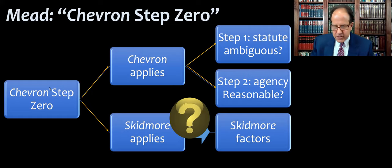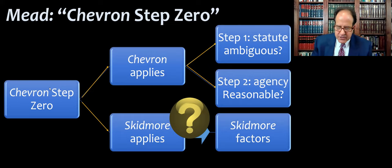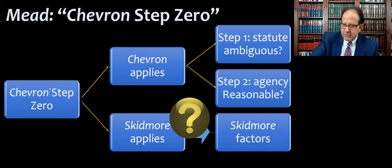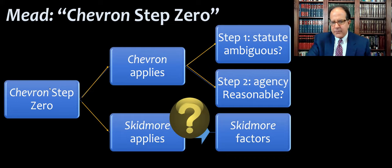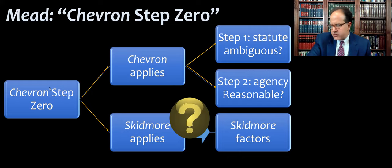So Roberts says we're not doing Chevron, but then he might as well be — he still says the statute is ambiguous and then says this interpretation is a reasonable one because it saves the statute, but says he came up with it himself, not from the agency. This is confusing because in Mead, which brought us Chevron step zero, you would then proceed to Skidmore and go through the Skidmore factors, which this opinion doesn't do.